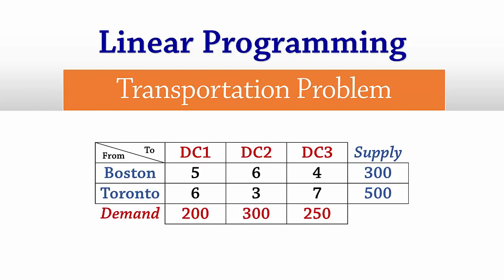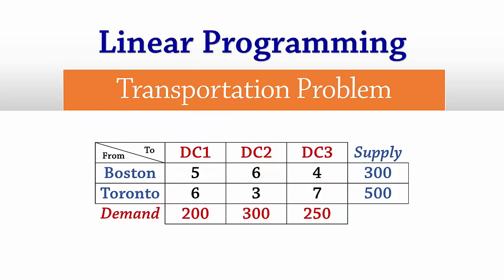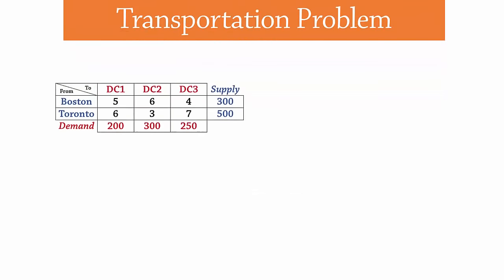The costs of transporting a unit of the product from origins to destinations are seen here. For example, it costs $6 to ship a unit of the product from Boston to distribution center 2. Now, let's draw a transportation network for this problem.